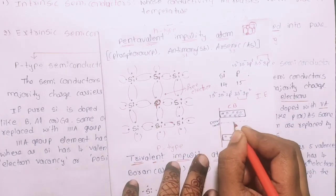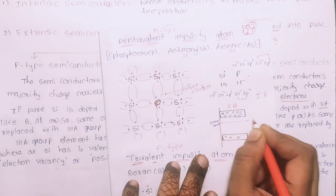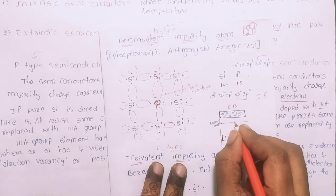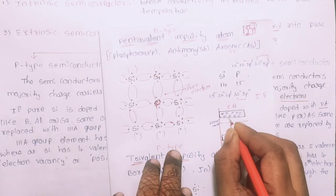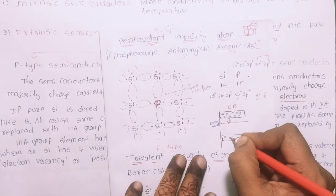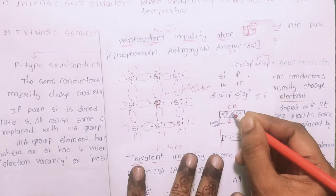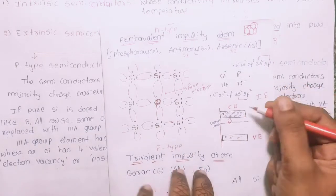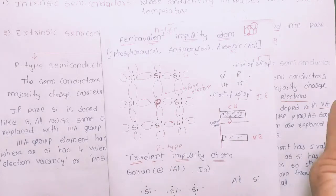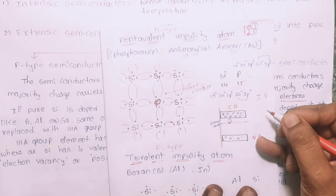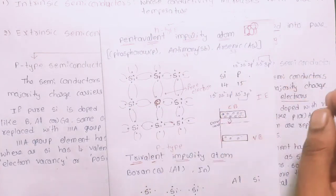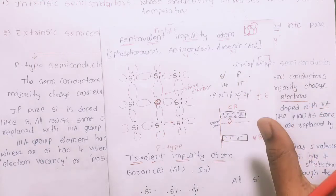The ionization energy is sufficient to raise the donor level electrons into the conduction band. The electrons move from the donor level to the conduction band, and conductivity increases. This is N-type semiconductor — without requiring much energy, a small amount is enough to increase conductivity.